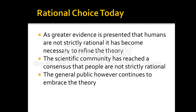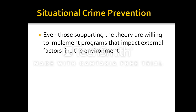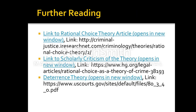Today, as greater evidence has been presented that humans are not strictly rational, it has become necessary to refine this theory — to change it. We have reached a consensus in the scientific community that people are not strictly rational, so we need to look to external things like environmental and psychological factors. The general public, however, is very enamored with the idea of rational choice and continues to embrace it via politicians. Even those supporting rational choice are willing to implement programs focused on environmental factors, and situational crime prevention — something we'll talk about in another lecture — is one of the practical applications of this modified rational choice theory.